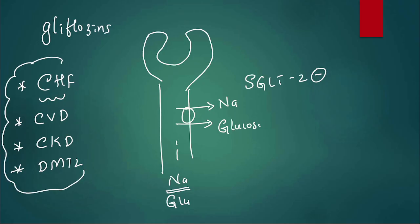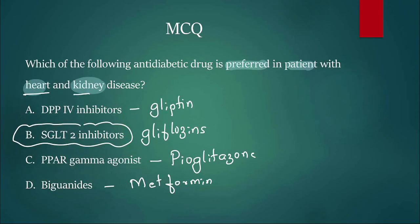Recently, remember this: gliflozins are used in four conditions - CHF, cardiovascular disease, CKD, and type 2 diabetes. This has been tested in every different type of exam. What I want you to write in the comment section is what adverse effect comes to your mind when you read about gliflozins. The answer is SGLT2 inhibitors.